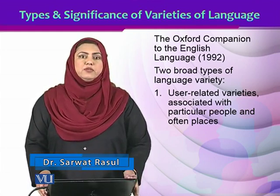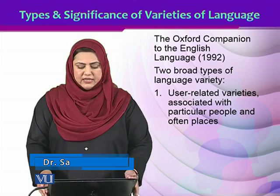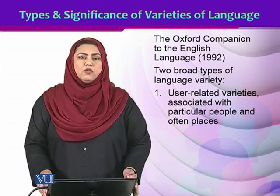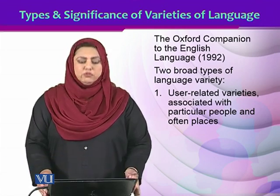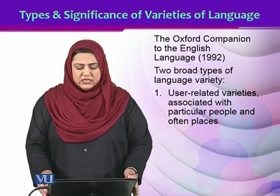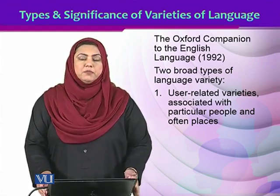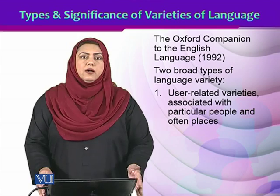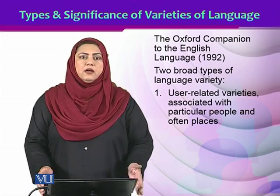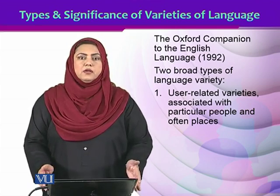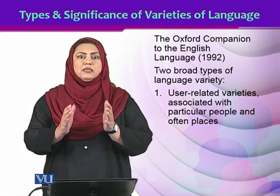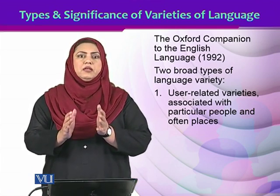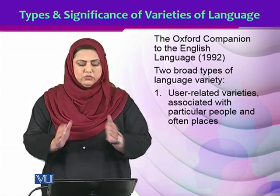The first one is user-related varieties — varieties that are based on users, that are associated with particular people, particular groups, particular communities, depending upon the users and the groups of people who are using them.